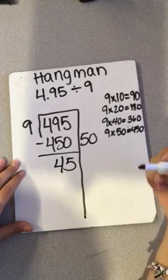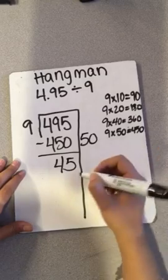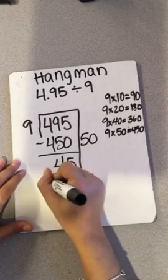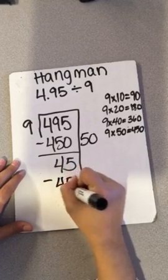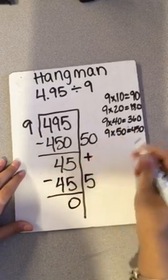And because I know my 9's multiplication facts, I know I can pull out 5 groups of 9, which is 45. When I end up with 0, you add up your groups, and you get 55.